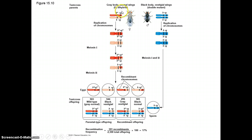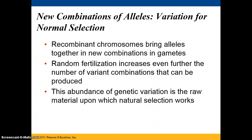As you can see on the left-hand side, you have your red chromosome and its copy and your pink chromosome and its copy; they pair up and exchange genetic information. Where these genes would typically be inherited together, when crossing over occurs they are no longer inherited together. These recombinant chromosomes bring alleles together in new combinations in the gametes, which further leads to genetic variation. When random fertilization happens, that even further increases the number of variant combinations that can be produced. It is the abundance of genetic variation that is the raw material upon which natural selection works.